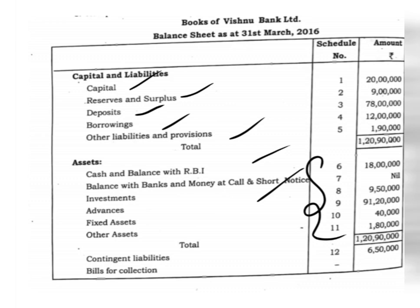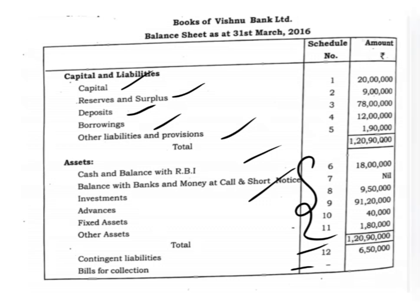After the balance sheet, we have to show two more items. Contingent liabilities, note number 12 — acceptances on behalf of customers amounting to 6,50,000. One more item is bills for collection, which does not have a note number, but in this case no amount is given either. This is the solution for the present question. I will come up with the next video where we will solve the question of preparing the balance sheet and profit and loss account along with the relevant notes, which usually comes for 24 marks. Thank you for watching.